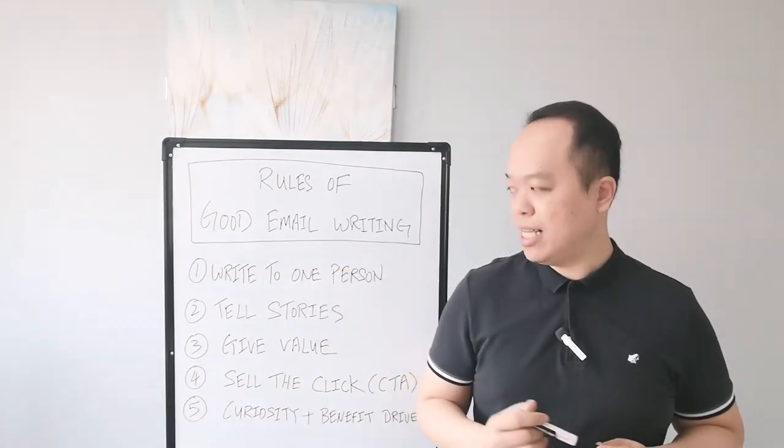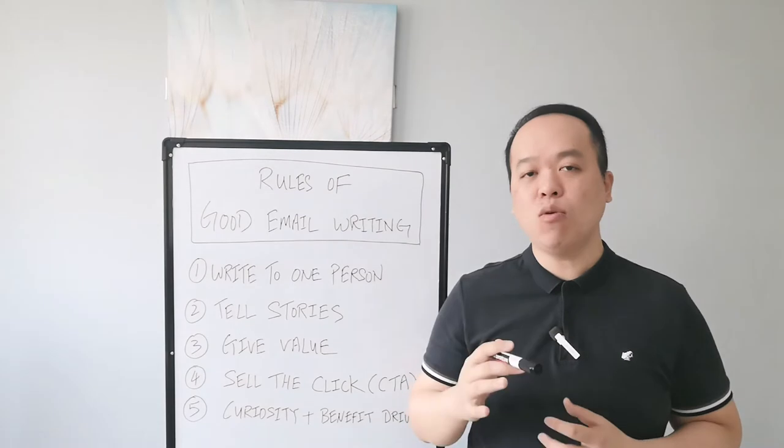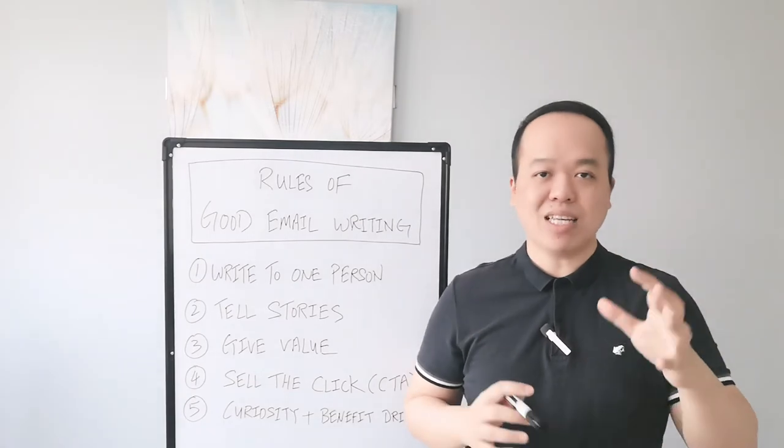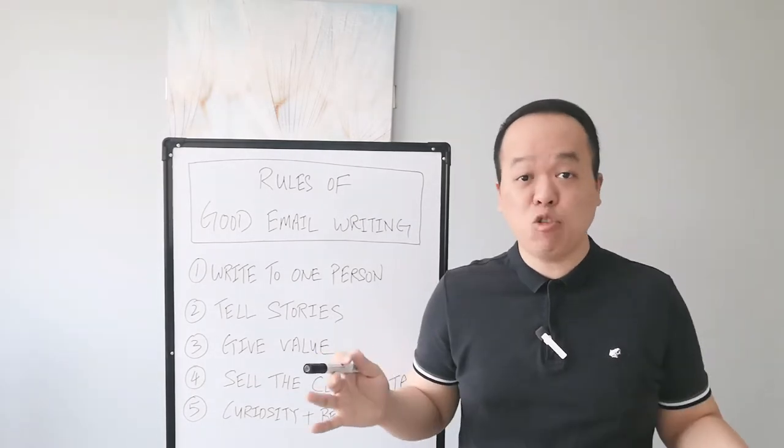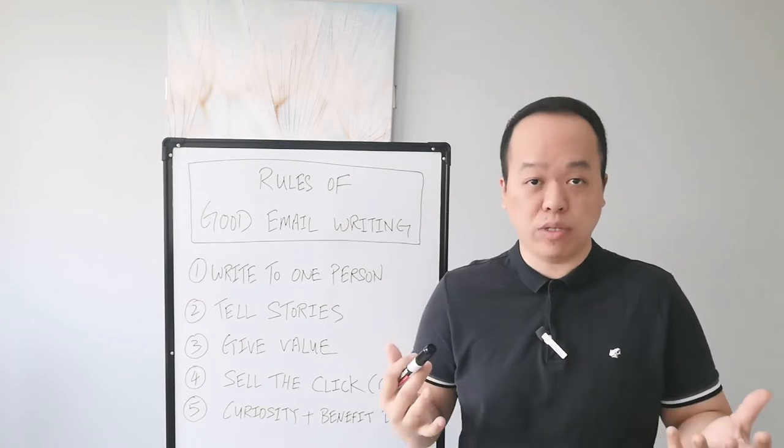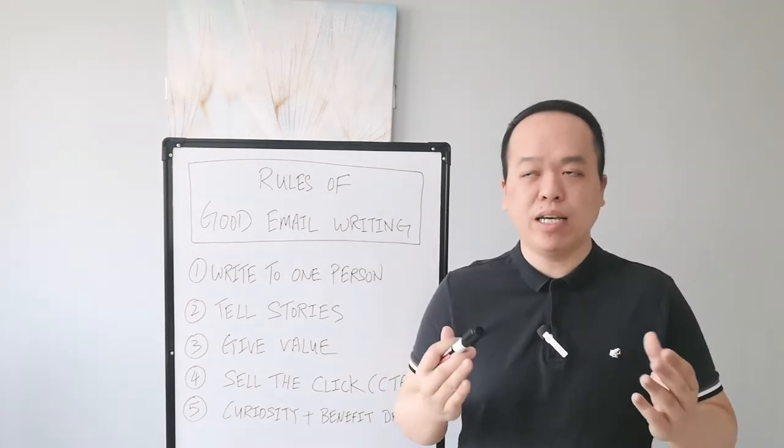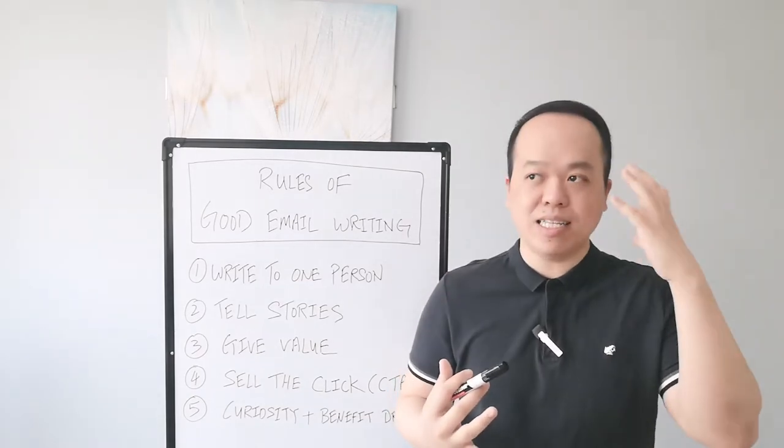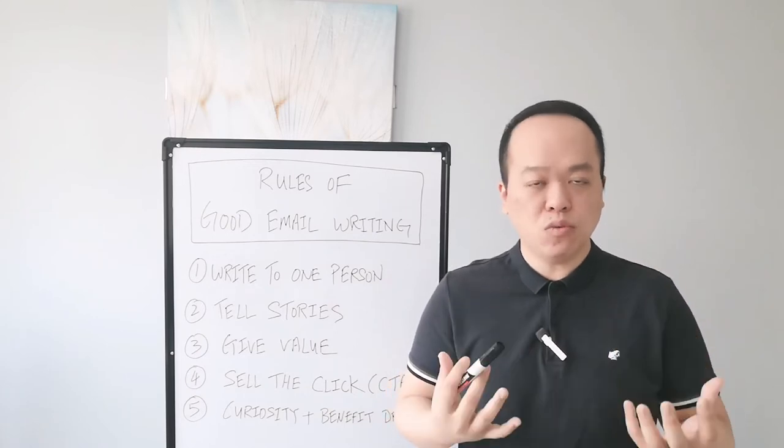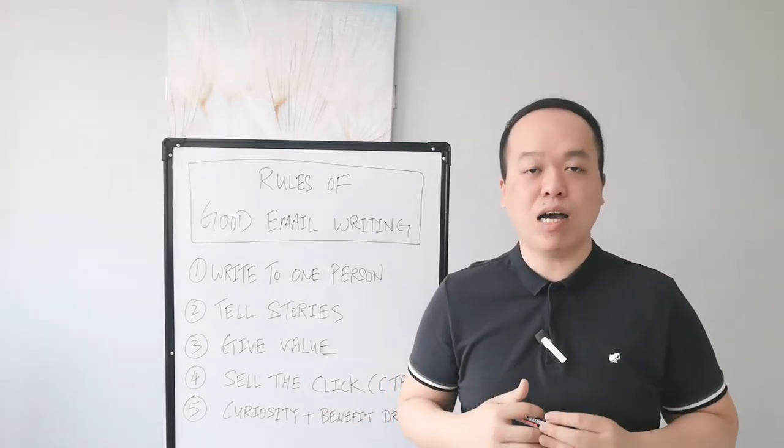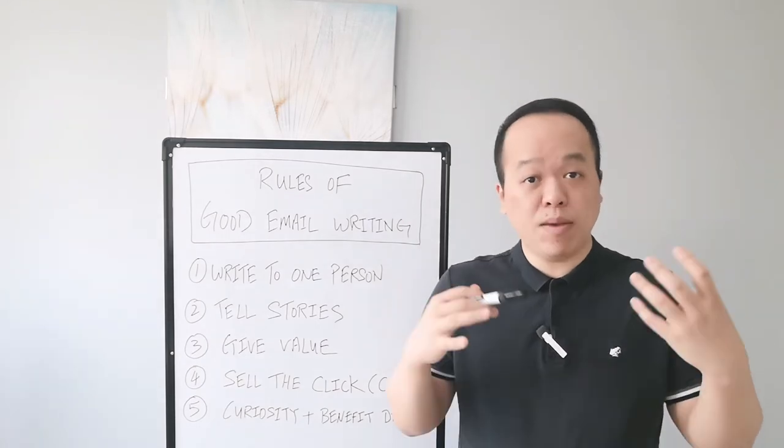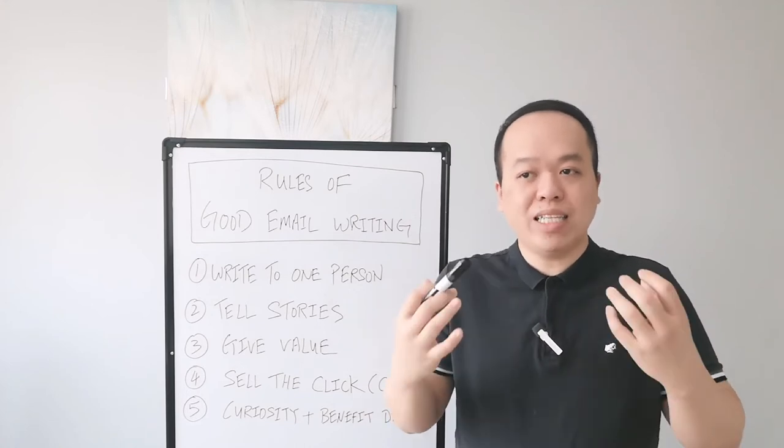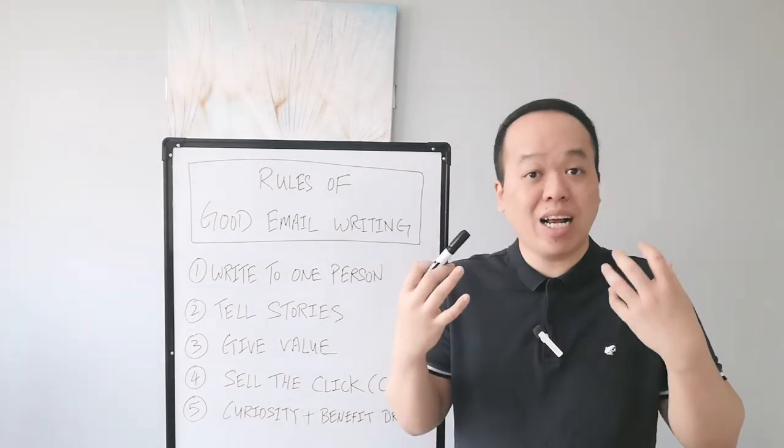Rule number two is to tell stories. The reason why telling stories makes a good email marketing is because stories are very different. Nobody can duplicate because every person has their own stories to tell, so it's very unique and tends to trigger an emotional connection. You can write a good story to tell about the problems that most people are facing, and maybe you can agitate them with their emotions to trigger their response to make them feel that they have to act now before it's too late.